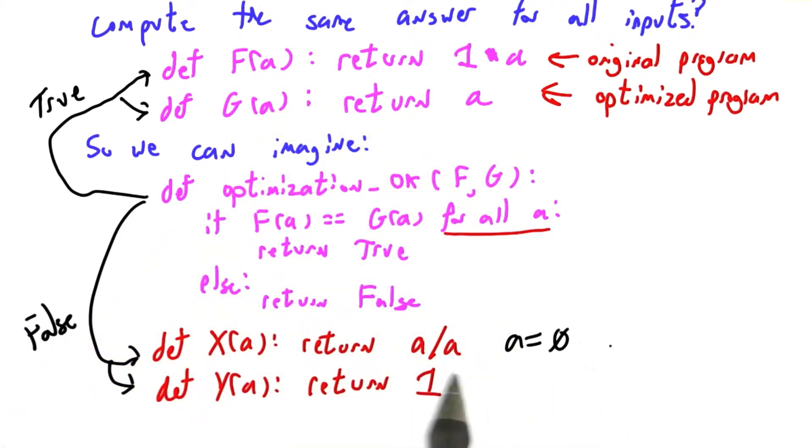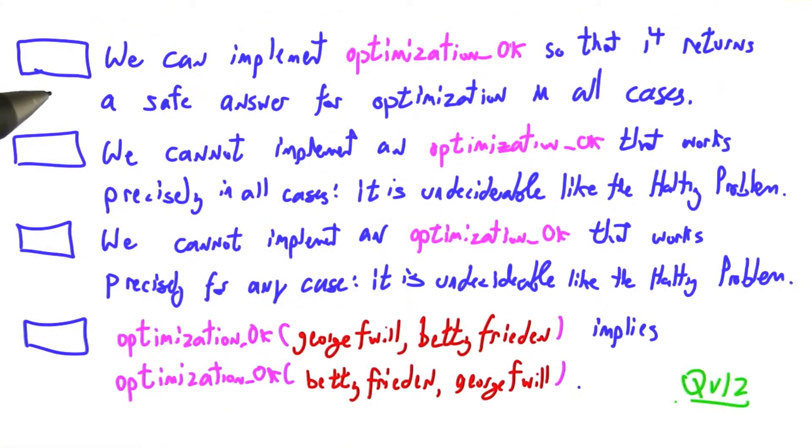because remember, if a equals 0, then this one is division by 0 exception, and this one is 1, and those aren't the same thing. Alright, so here's the actual quiz.